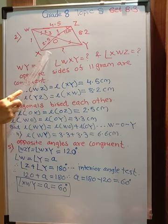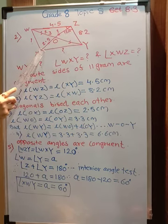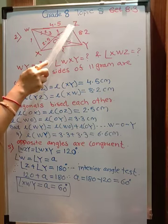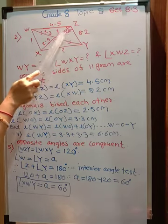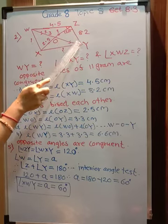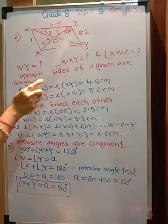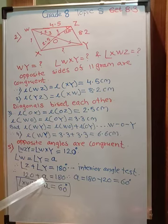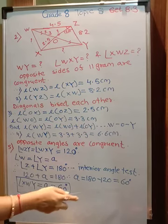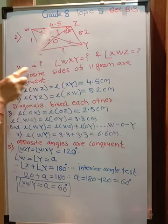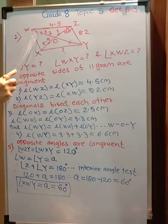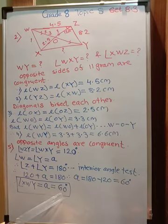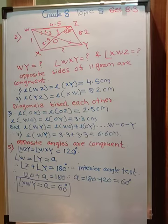Opposite angles are equal, so if angle Z is 120°, then angle X is also 120°. Since two sides are parallel, using the interior angle theorem with angle Z equals 120°: 120 plus angle Y equals 180 degrees, so angle Y equals 60°. Since opposite angles are equal, angle W also equals 60 degrees. That's all for today, thank you.